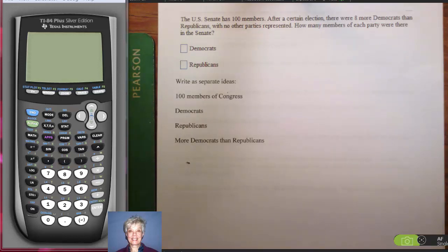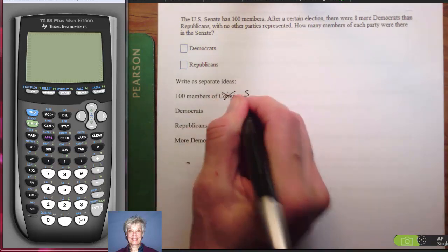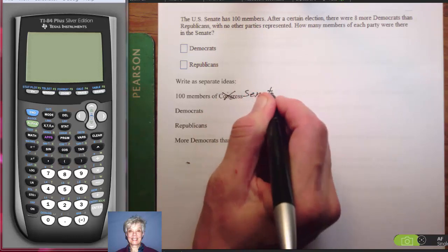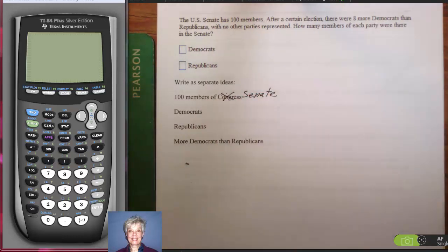The trick to doing this is to break this story problem down into its parts. First, there are 100 members in the U.S. Senate. I should have said Senate. Let's do that right now. Senate, because the Congress includes the House of Representatives as well, and we're just talking about the Senate there. There are 100 members of the Senate, and we're assuming there are no independents and no Green Party and nothing else but Democrats and Republicans. Those are the only two parties represented.